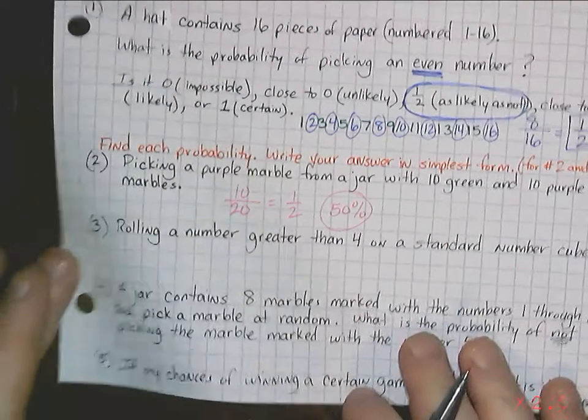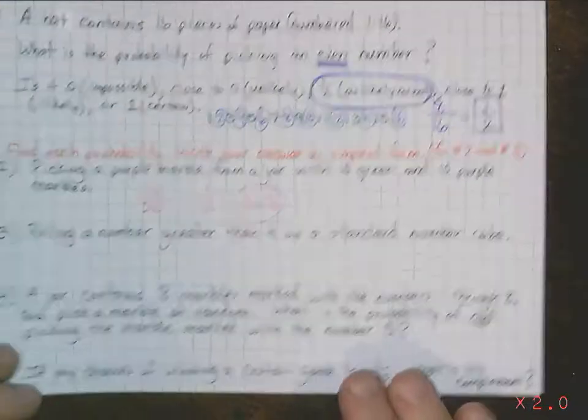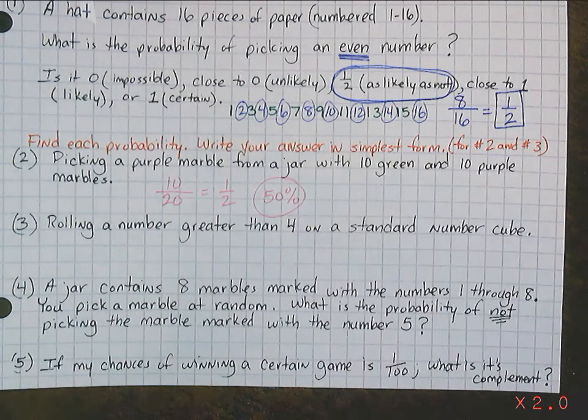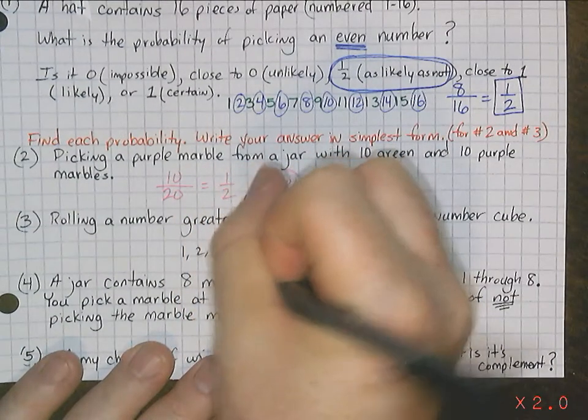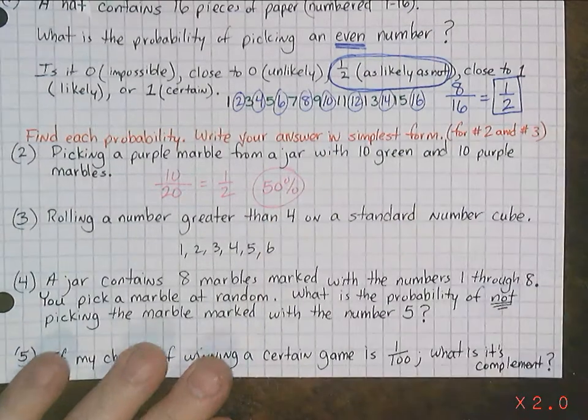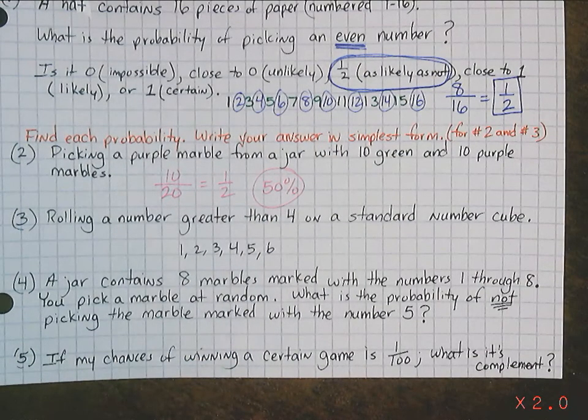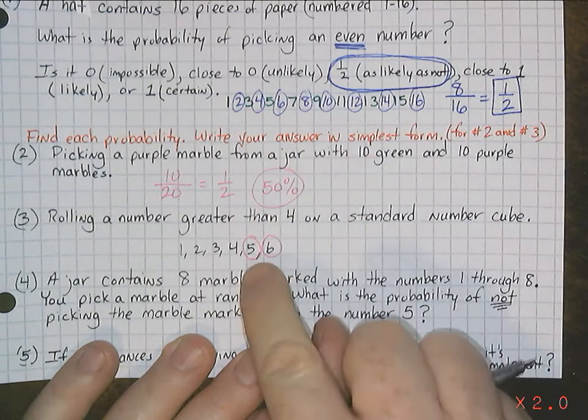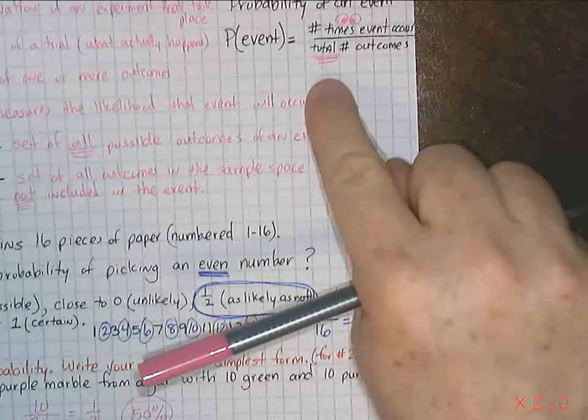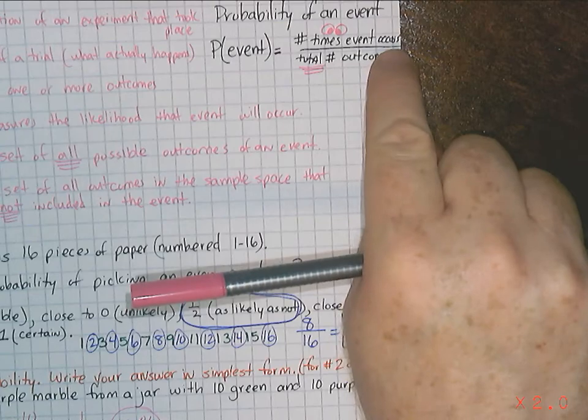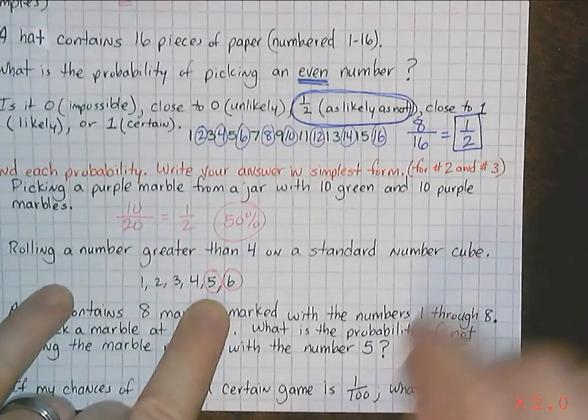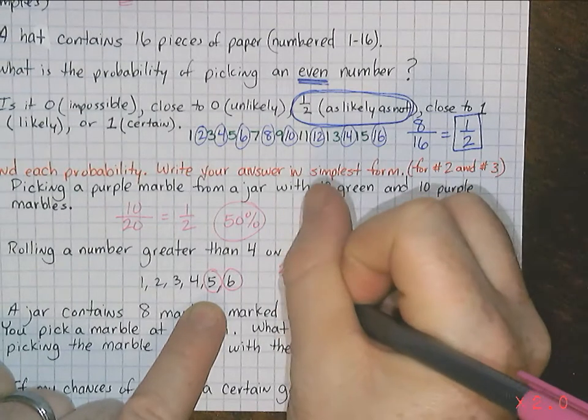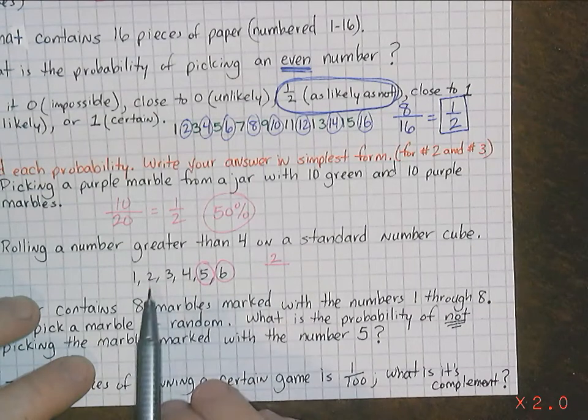Number 3. Rolling a number greater than 4 on a standard number cube. Well, greater than 4. Well, what's greater than 4? And what's a number cube? Well, a number cube. So, I'm going to create a sample space. It's got 1, 2, 3, 4, 5, and 6. Those are the numbers of a number cube. Or die, if you have a die. But, the only numbers that are greater than 4 are only 2. Only 5 and 6 are greater than 4. So, what are you looking for? You're looking just for 5 and 6.